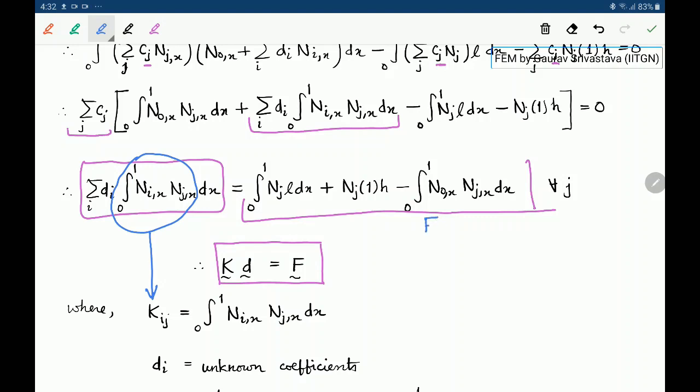And this right hand side is F which has an index on J. So J is spanning the row numbers and I is spanning the column numbers.